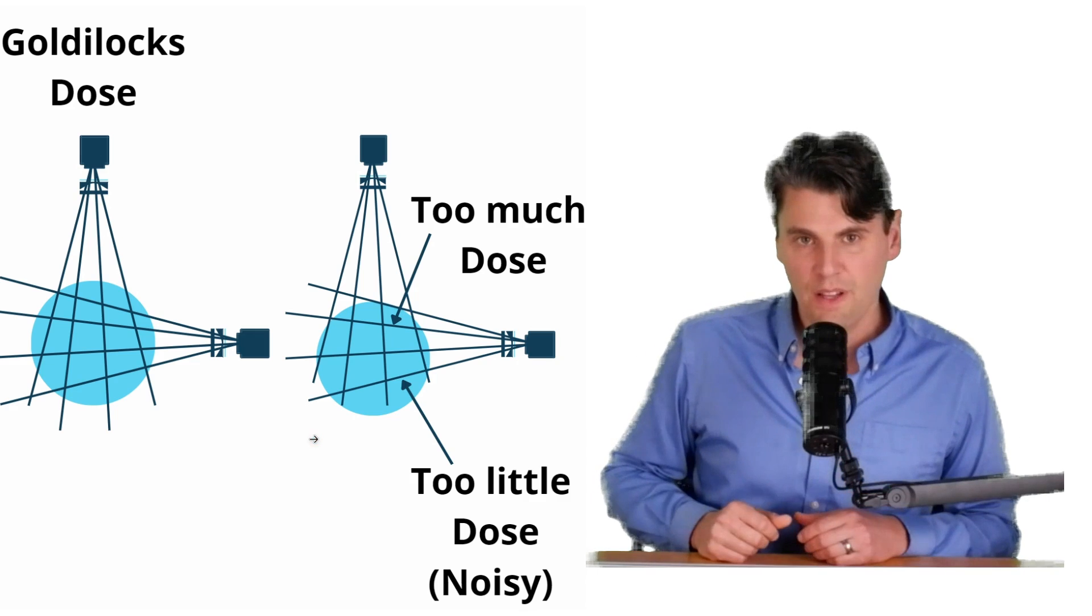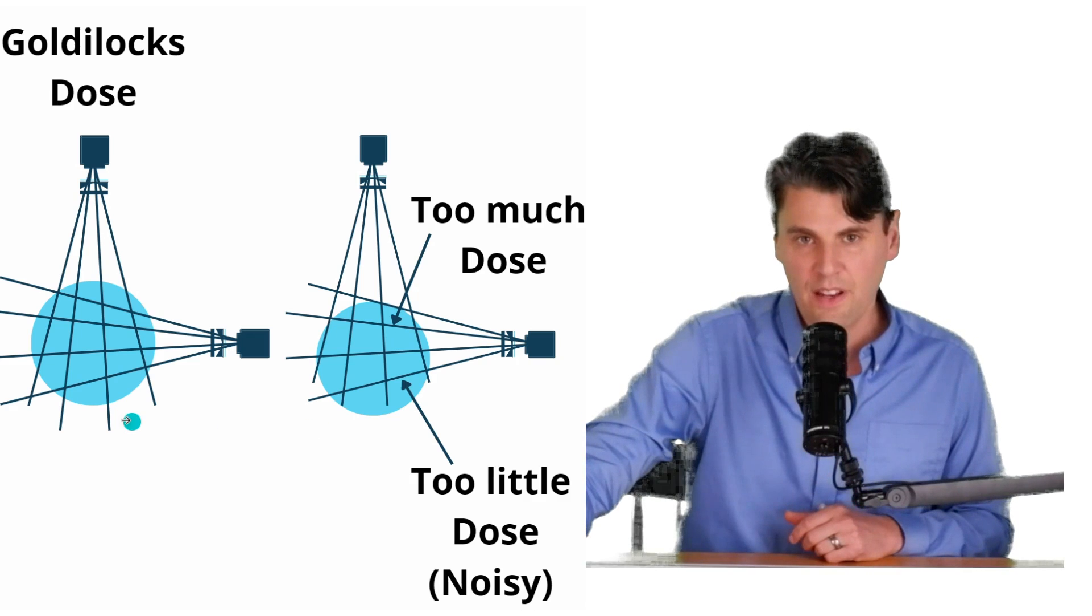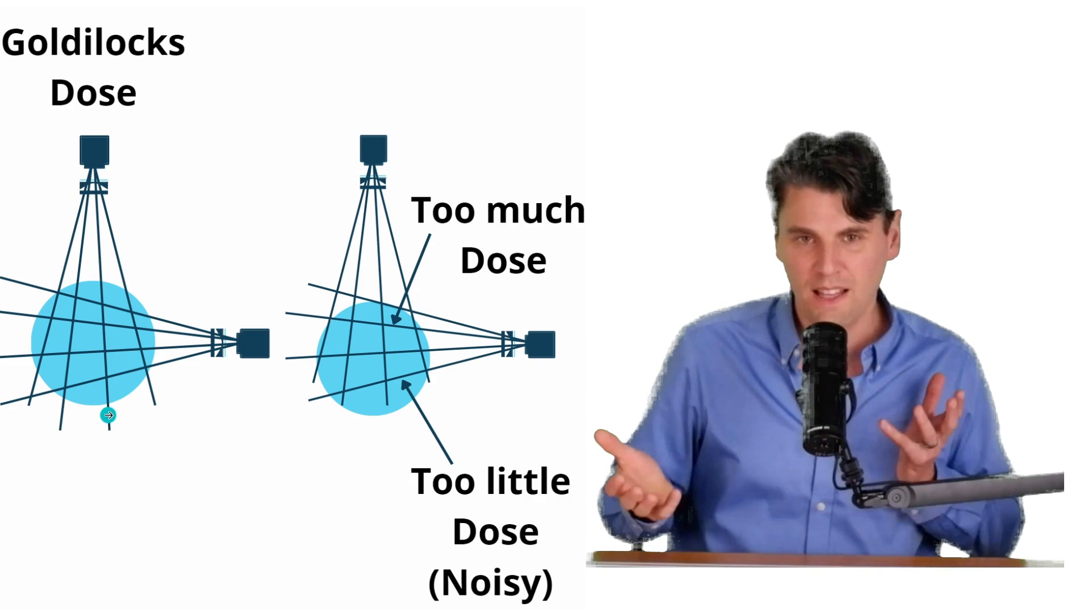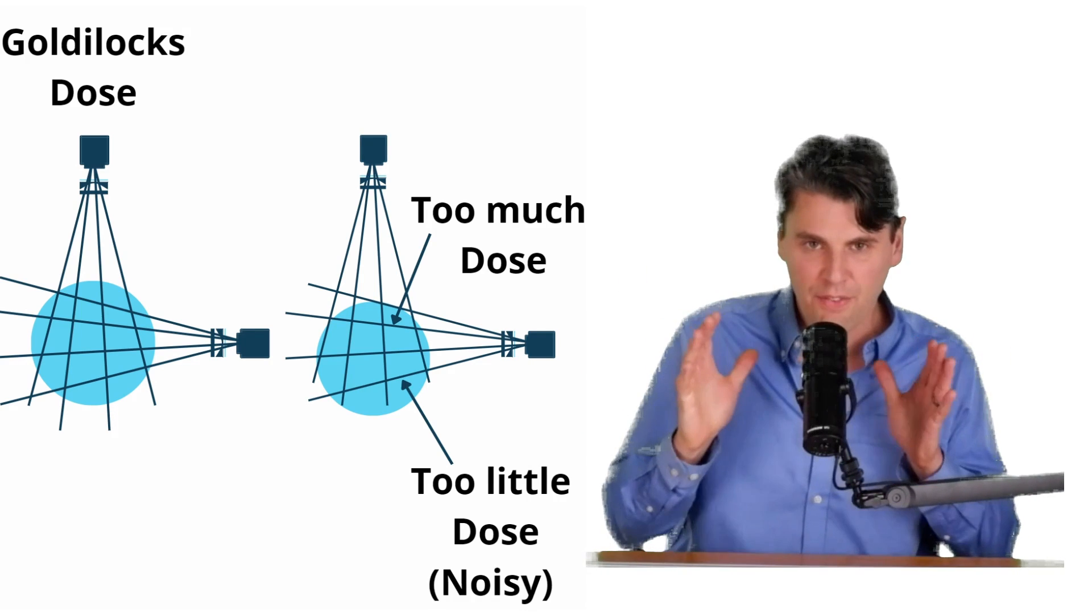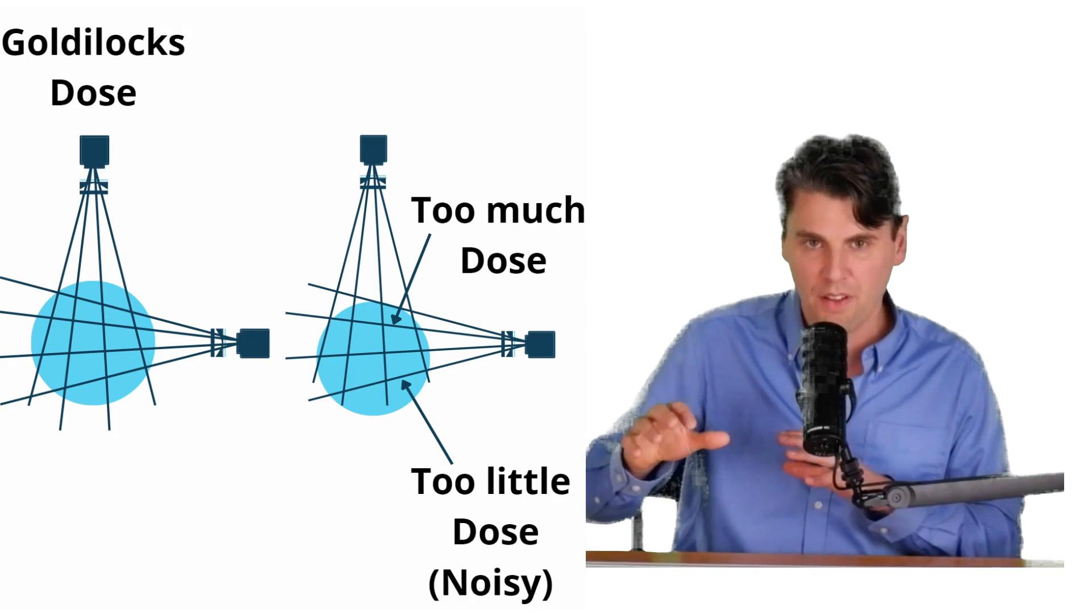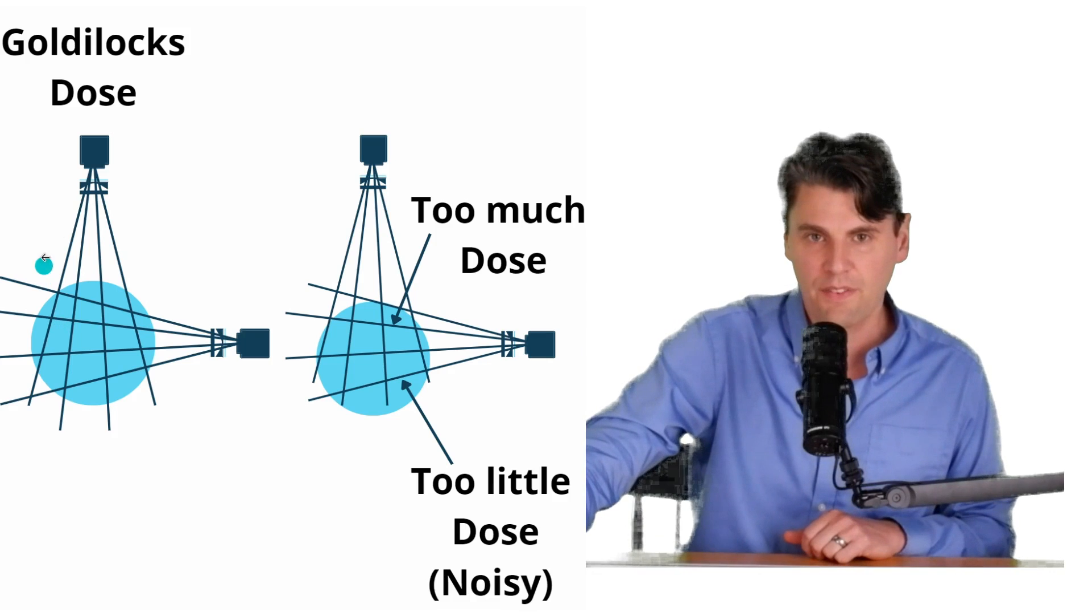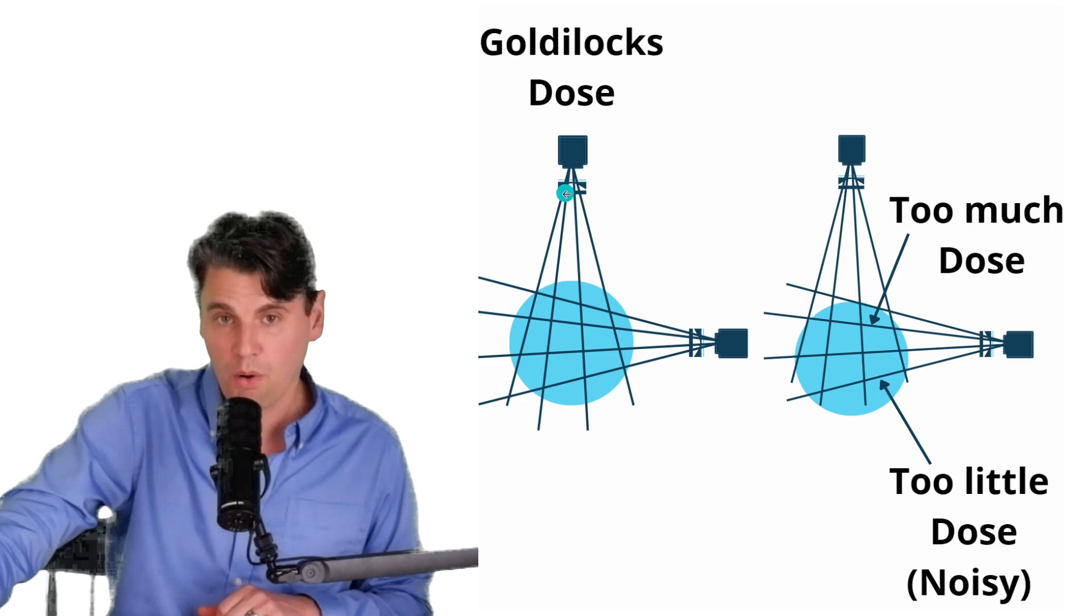If we look at two different views, again, in the left scenario here, this is what we call the Goldilocks scenario where it's just right. We've got the left-right position's good, the up-down position's good. And if you look at some of the different rays, you can see that we have a relatively good balance because we're going through the bowtie and then the object's relatively well-centered.